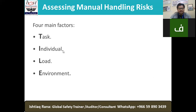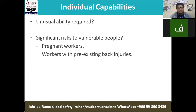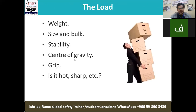When assessing manual handling risk, there are four main factors — remember the word TILE: Task, Individual, Load, and Environment. Let's discuss each. The Task includes the height of the load, repetition, carry distance, stooping, twisting, rest breaks, vertical distance, above-shoulder height lifts, and overreaching. The Individual refers to who is going to lift — their capabilities, any unusual ability required, and significant risk to vulnerable people such as pregnant workers or those with pre-existing back injuries.